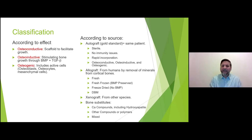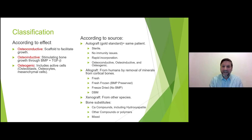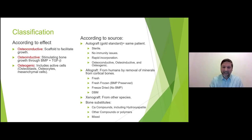Allografts are grafts taken from other humans and processed to reduce the risk of infection and immunological response. They can be fresh, fresh frozen, freeze-dried, or DBM. Fresh frozen preserves BMP; freeze-dried does not preserve BMP, which is the protein mostly linked to encouraging bone to heal. We'll talk about DBM separately.